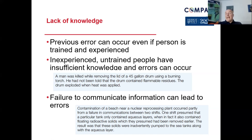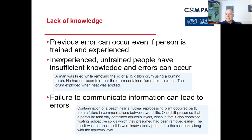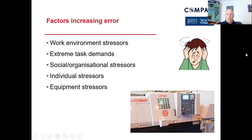The next point is about communication or lack of it leading to errors. At a beach near a nuclear reprocessing plant, contamination occurred because of lack of communication between shift transitions. It's important to ensure good handover between shifts when it is safety critical. The shift presumed a particular tank only contained aqueous layers — as they were used to — when in fact it also contained floating radioactive solids. That lack of knowledge, or not being communicated with, led to that slurry spreading and causing a major incident.